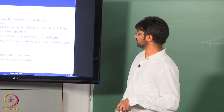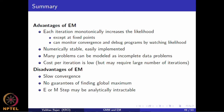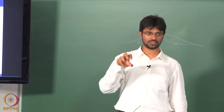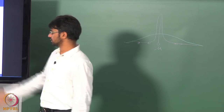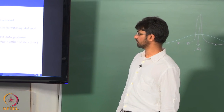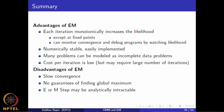To summarize: the major advantage of EM is that it monotonically increases the likelihood — guaranteed. Any model with hidden or latent variables where you apply EM carefully will increase the likelihood except at fixed points. EM is also numerically very stable compared to gradient descent, easily implemented, and many problems can be modeled as incomplete data problems. The disadvantages are slow convergence, no guarantee of finding the global maximum, and steps that may be analytically intractable.